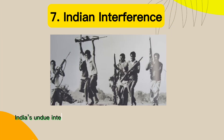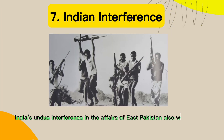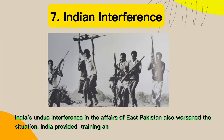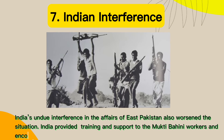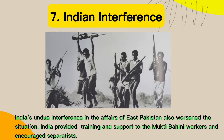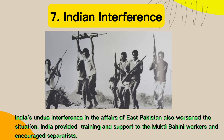7. Indian interference. India's undue interference in the affairs of East Pakistan also worsened the situation. India provided training and support to the Mukti Bahini workers and encouraged separatists.